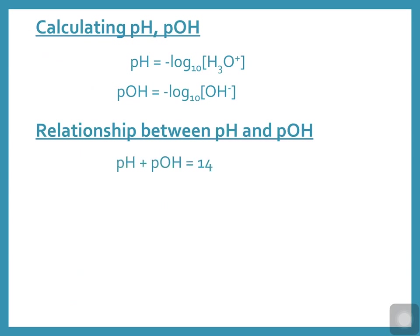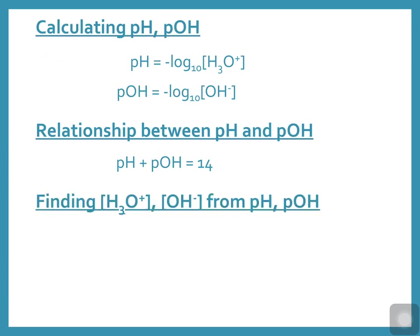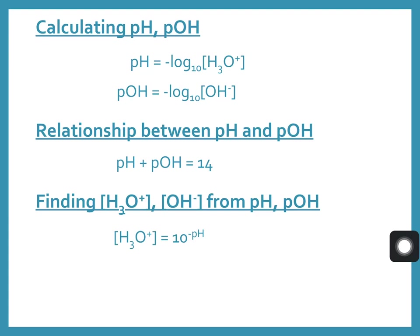pH and pOH together add up to 14, so pOH is a reverse scale of pH. Zero on a pH scale is 14 on a pOH scale, and 14 on the pH scale equals 0 on the pOH scale. To find the hydronium or hydroxide ion concentrations, hydronium ion concentration equals 10 to the exponent negative pH, and hydroxide ion concentration equals 10 to the exponent negative pOH.